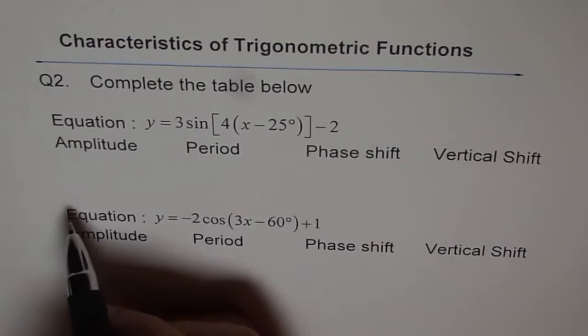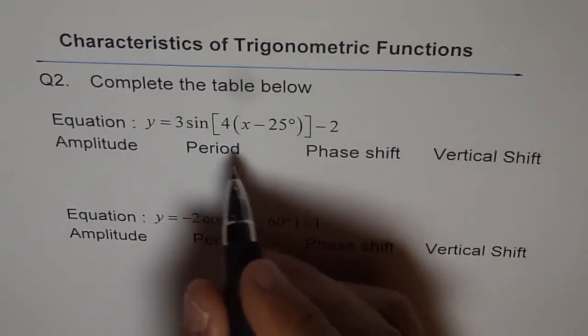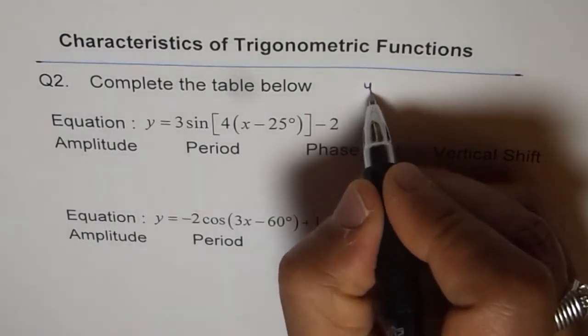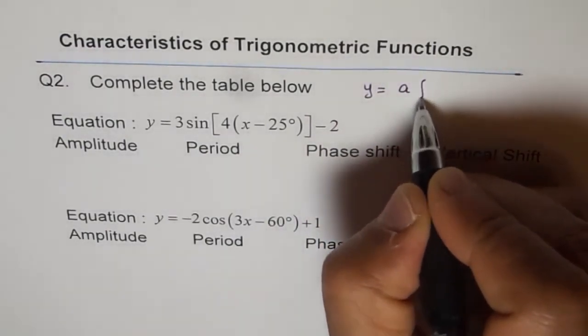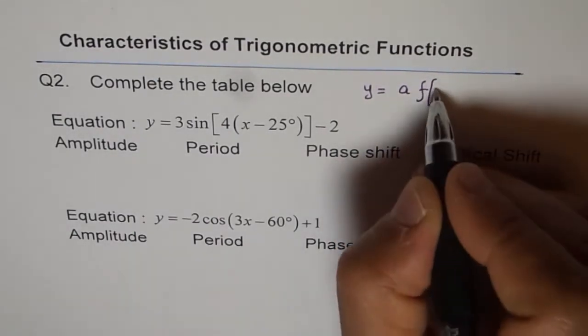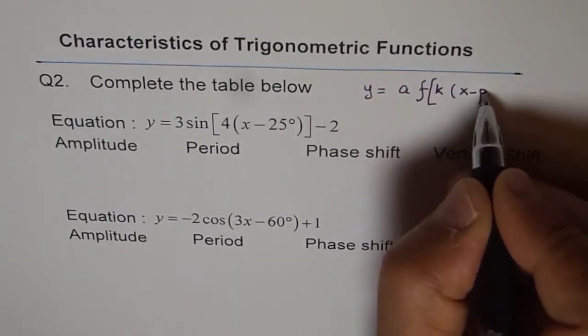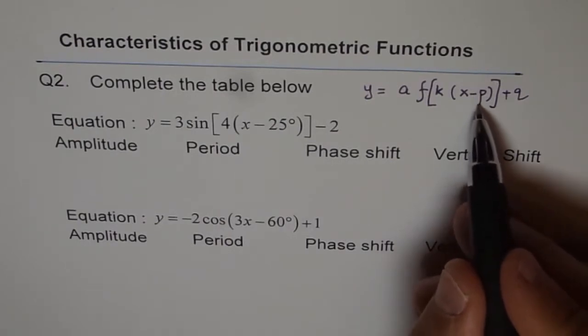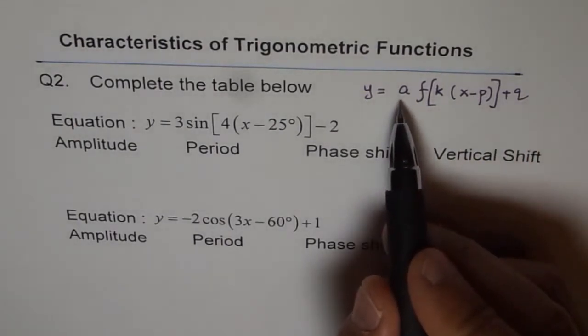So amplitude. You can straight away read from this point. That is the amplitude. Let me first write down a general equation in this form and explain all these terms. So in general we can write y equals a, the amplitude of the function. The function could be sine or cosine times k, and within bracket x minus p, the phase shift, plus q. In some books we are writing d here and c there.